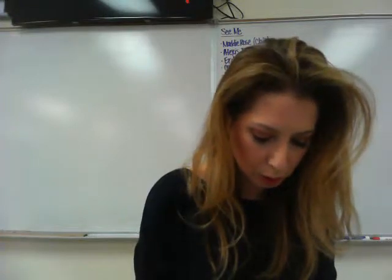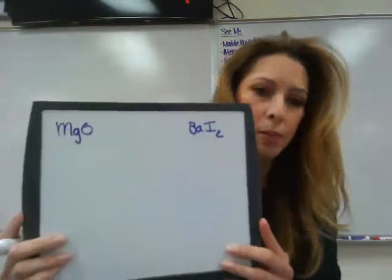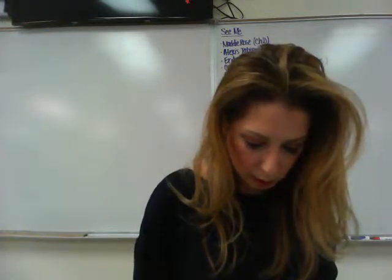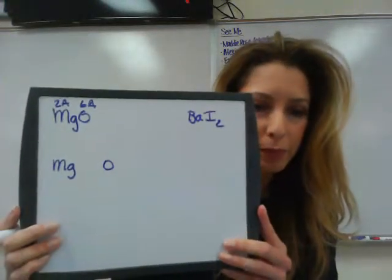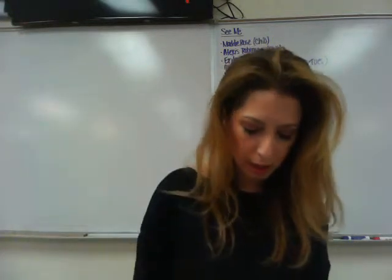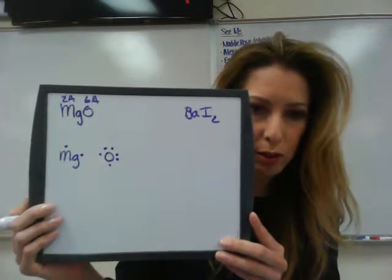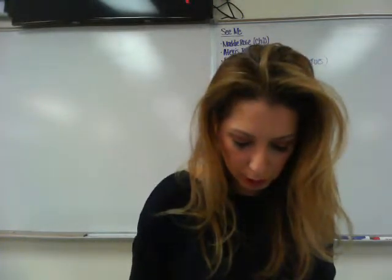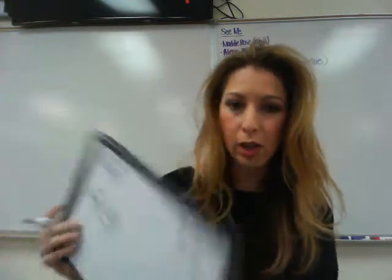Student exercise number two asks you to draw the Lewis structures for MgO and BaI2. For MgO, we have one magnesium and one oxygen. Magnesium is in group 2A and oxygen is in group 6A, so magnesium has two dots on it and oxygen will have six. Magnesium wants to give up its two valence electrons to oxygen because underneath it has eight, which makes it stable. Drawing arrows shows that those two valence electrons will leave and join oxygen, giving oxygen an octet.